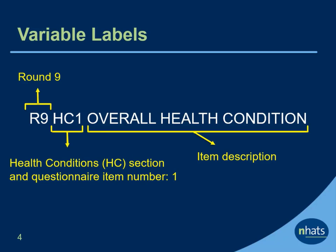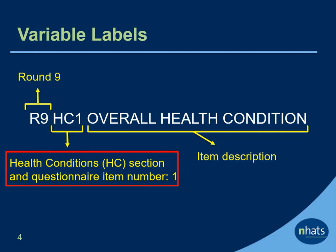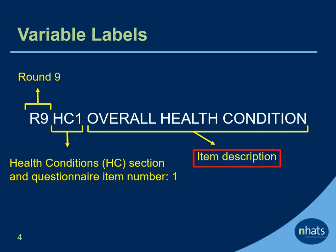Variable labels in NHATS also follow a consistent pattern. The variable labels begin with the round number, followed by the instrument section and item number from the questionnaire, followed by the item description. For example, in the variable label for HC9Health, the label indicates that the variable is from round 9, the questionnaire item is HC1, and the item asks about overall health condition.